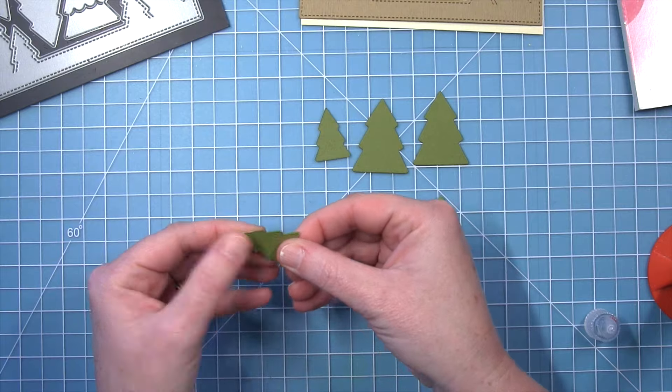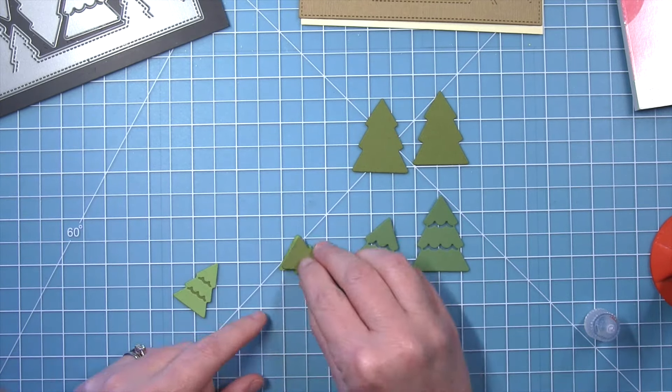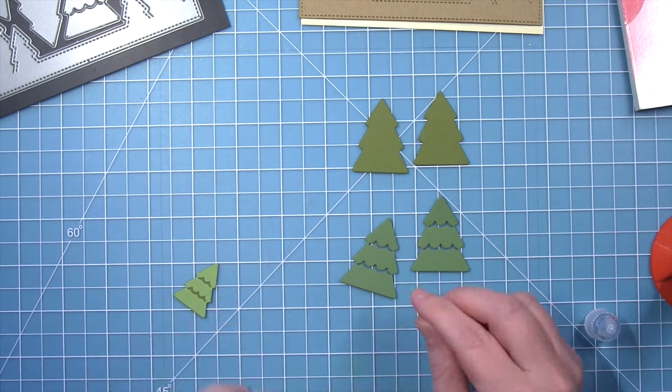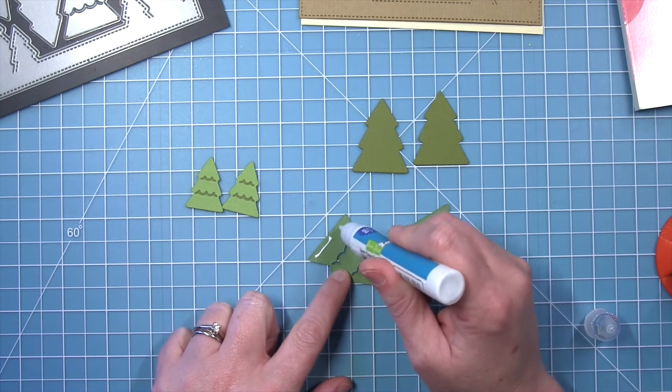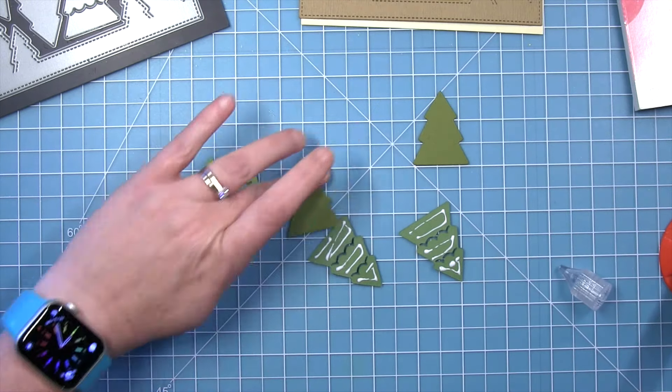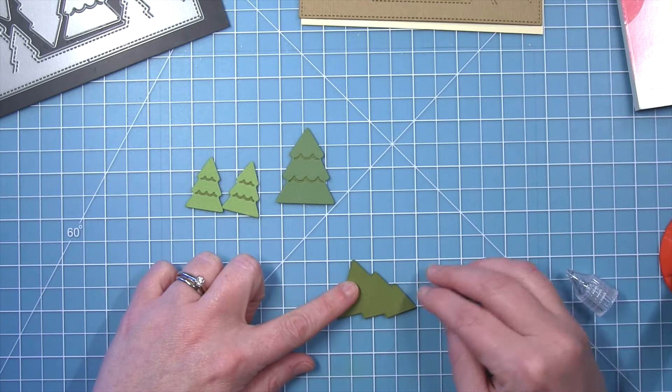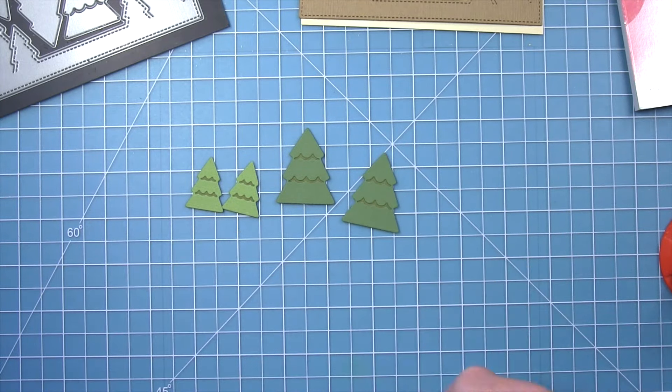And I'm going to layer the lighter colors over top so you see that green through those little scallop details on the trees. So I have two little light green trees and then I'll have two darker big trees, and we will layer these on the front and kind of overlap them to frame up our little scene nicely.